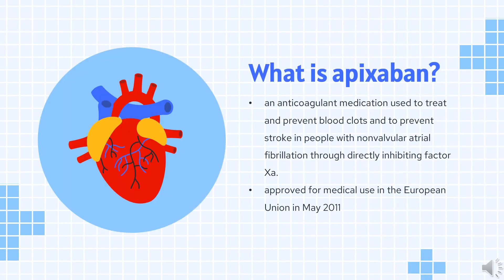Apixaban, sold under the brand name Eliquis, is an anticoagulant medication used to treat and prevent blood clots and to prevent stroke in people with non-valvular atrial fibrillation, through directly inhibiting factor XA. In 2007, Pfizer and Bristol-Myers Squibb began development of apixaban. It was approved in the European Union in May 2011 and in the United States in December 2012, and is on the World Health Organization's list of essential medicines.